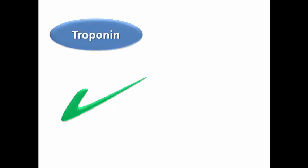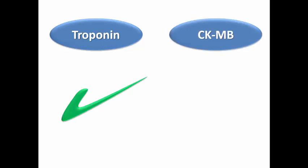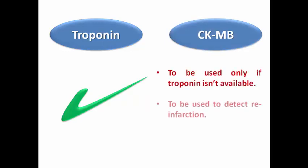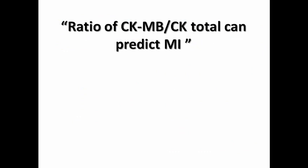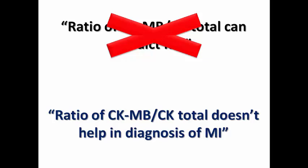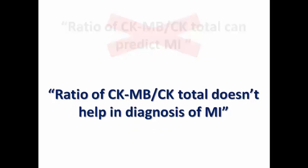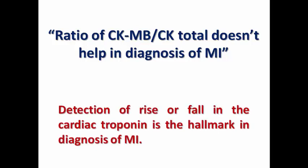Troponin is the best cardiac biomarker for diagnosis. When do we use CKMB? Only if troponin is not available at our hospital, and to detect reinfarction in some cases. Please depend on CKMB alone without relying on the ratio of CKMB to CK total. Regarding this concept of the ratio of CKMB to CK total: there is no evidence for it. The ratio does not help in diagnosing or ruling out MI. The hallmark of MI diagnosis is detection of rise or fall in cardiac troponin.